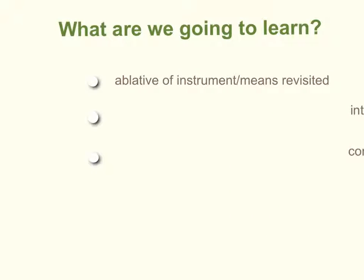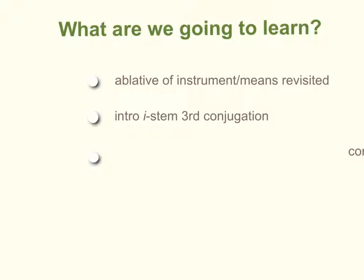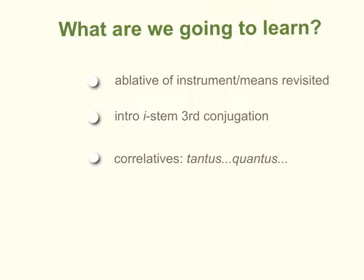The first topic is the ablative of instrument or means, revisited — we've already talked about that before, so it should be familiar. We're also going to be talking about a particular kind of third conjugation verb, augmenting what we know about them. We're also going to be learning about the correlative tantus-quantus, which is related to something we already know.